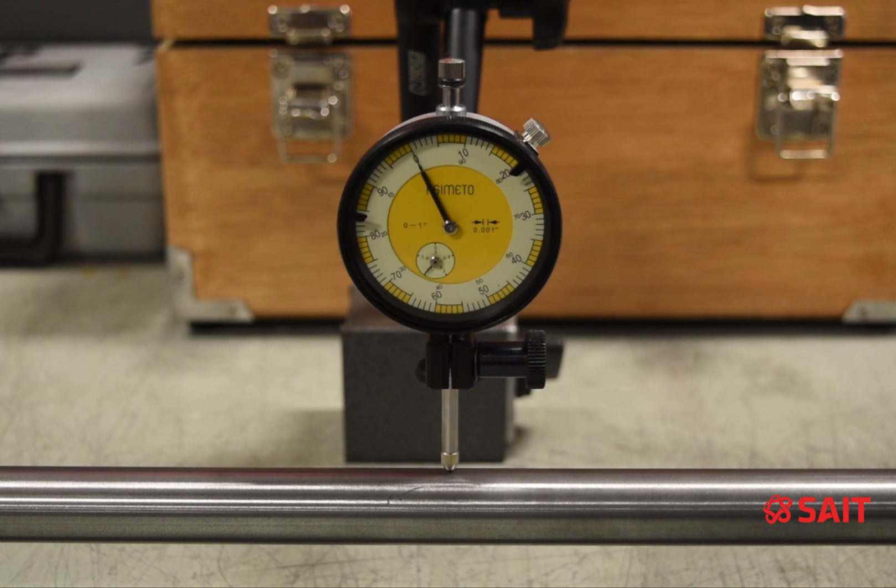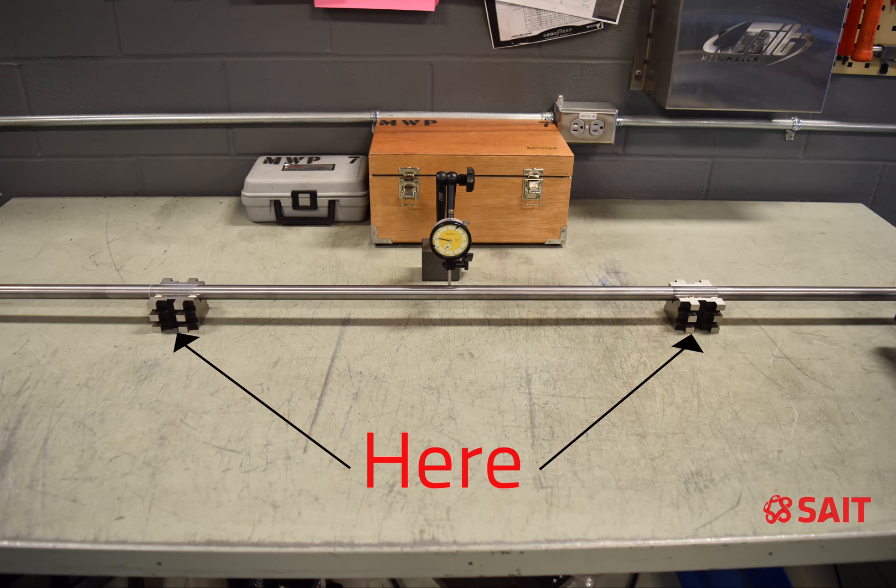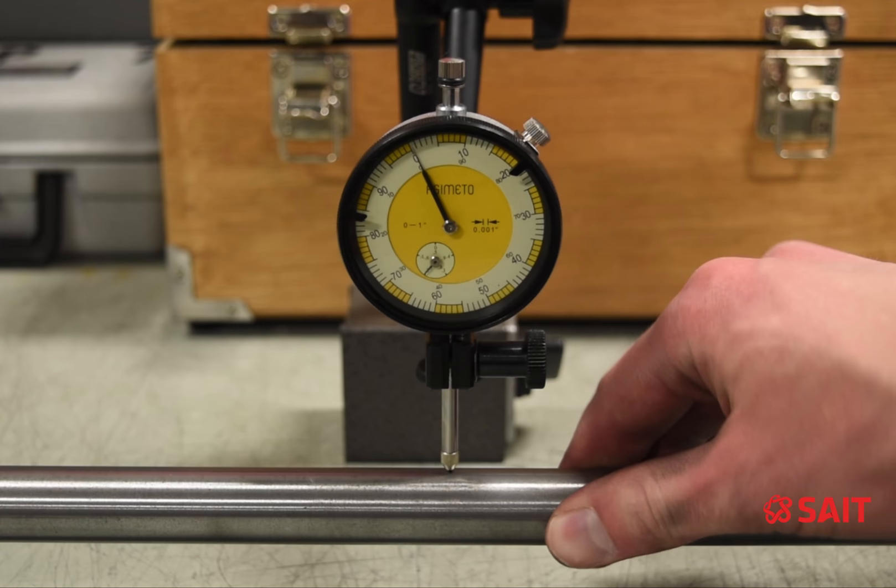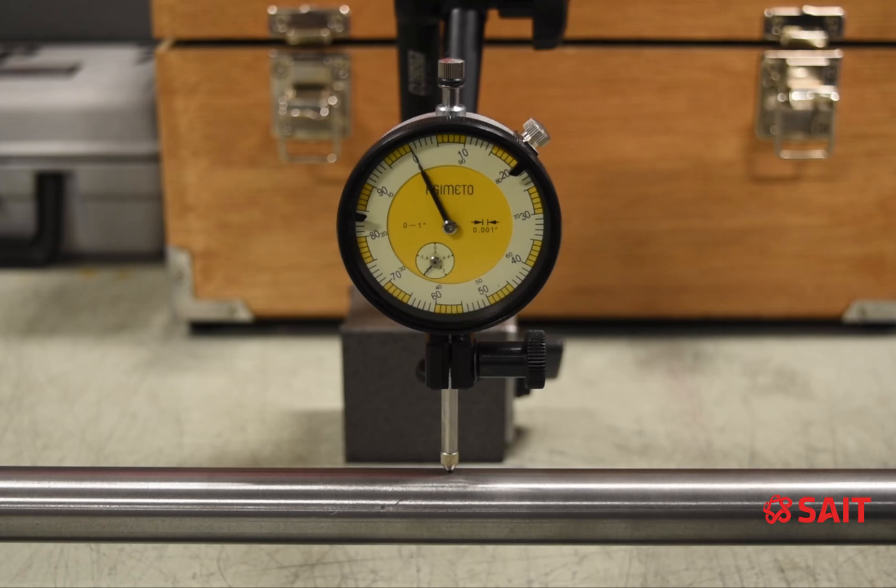Before we actually rotate the shaft to check the deflection, I want to point out that when you roll the shaft over, it's better to roll it by hand and hold it close to one of the V-blocks. If I push on the shaft or try to turn it closer to where the dial indicator is, you can see we end up getting some deflection from my hand.